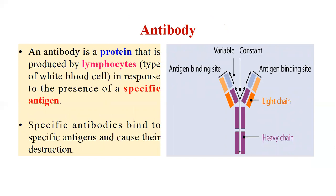Adaptive immunity works by developing antibodies in our body. An antibody is a protein produced by lymphocytes — a type of white blood cell — in response to the presence of a specific antigen. Looking at the structure of an antibody, we can see the light chain and the heavy chain. There is a constant part and a variable part, and the variable region contains the antigen-binding sites. These proteins are called immunoglobulins. Specific antibodies bind to a specific antigen and cause its destruction.